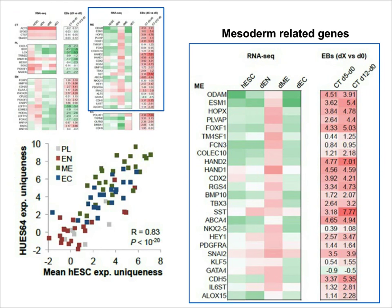To highlight one particular example, this shows the mesoderm-related genes. In the RNA sequencing you can see upregulation of these genes in the mesoderm, and during the EB differentiation, induction of most of them. Those results were initially derived using one embryonic stem cell line, Q64, but as shown on the scatter plot, we also verified that the uniqueness of expression seen here is generally representative of all other cell lines included — confirmed by the tight correlation between Q64 and the general ES cell panel.